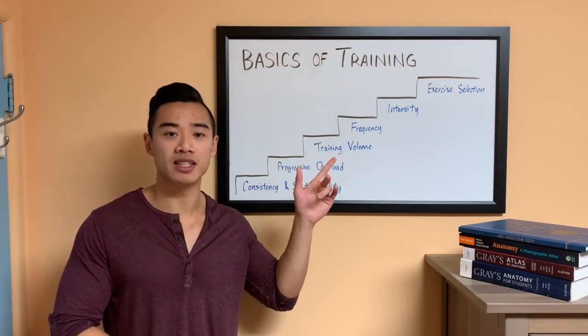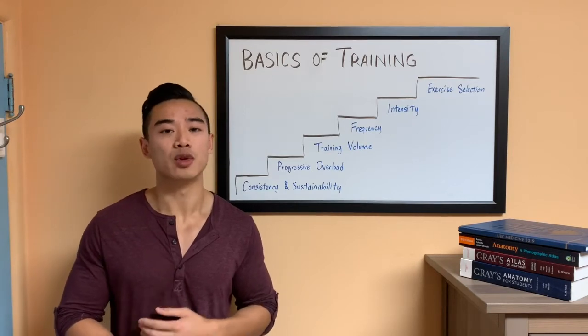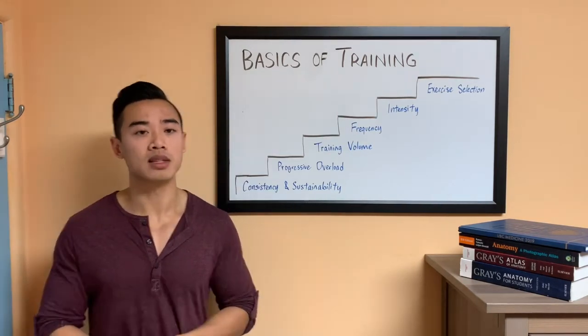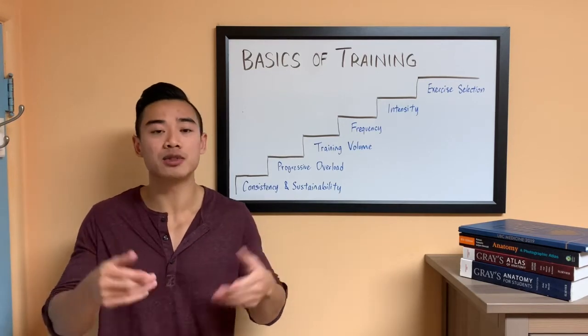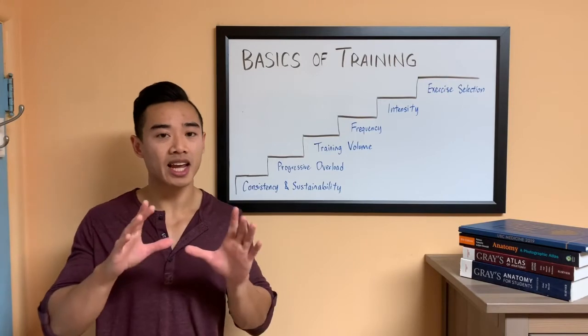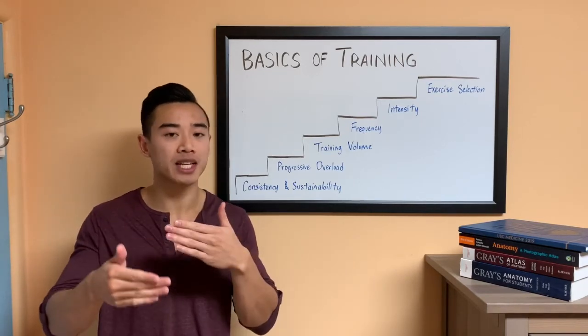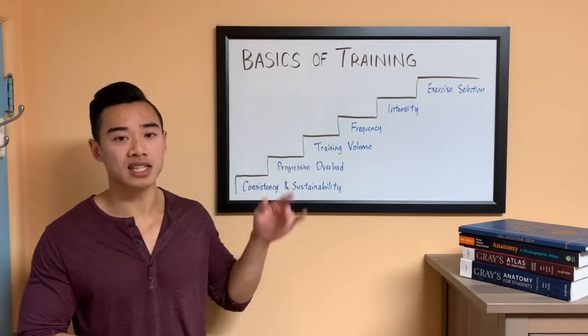The next concept is intensity, and intensity can be defined as the relative amount of weight you're lifting. Let's say for your maximum set of five, you can bench press 100 pounds for five reps. If you then bench press 80 pounds for five reps, you're doing 80% of your five rep max, and that is an intensity.